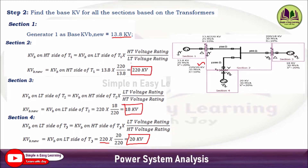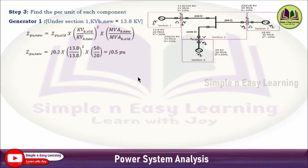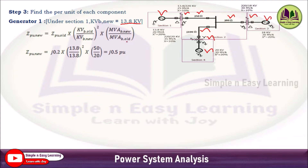Now find the per unit impedance of each component: generator G1, transformer T1, transmission lines 1, 2, and 3, transformer T2, generator G2, transformer T3, and generator G3. Starting with generator G1 in section 1 (base kV = 13.8 kV), apply the formula: Z_pu_new = Z_pu_old × (KVB_old/KVB_new)² × (MVAB_new/MVAB_old) = j0.2 × (13.8/13.8)² × (50/20) = j0.5 per unit.